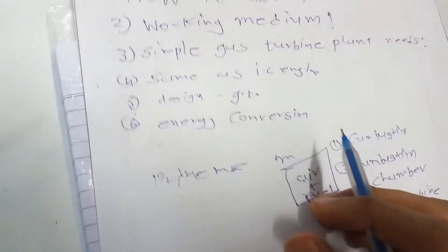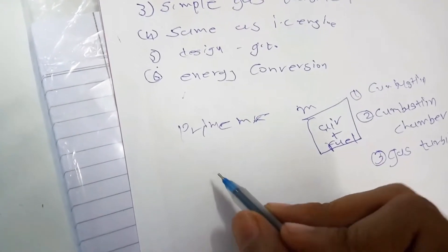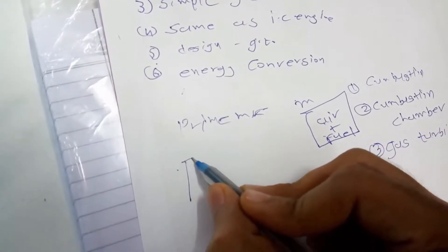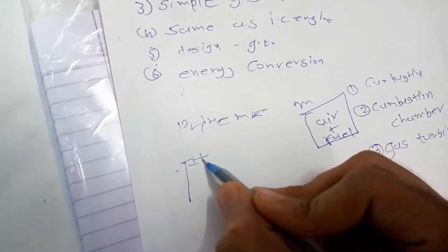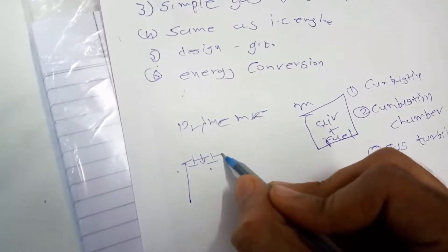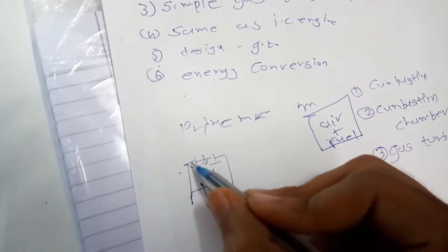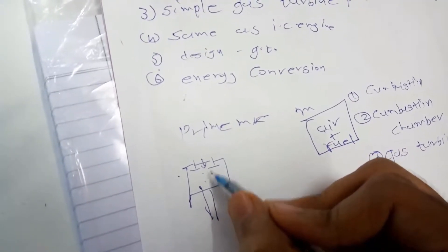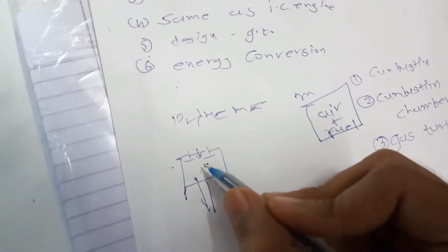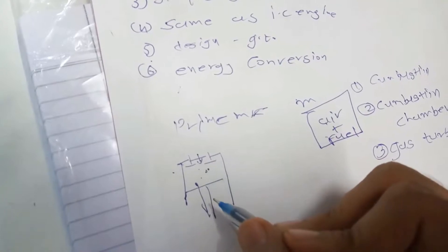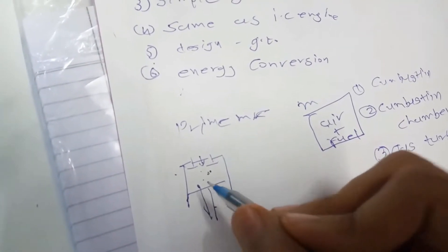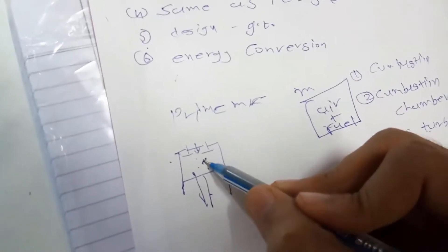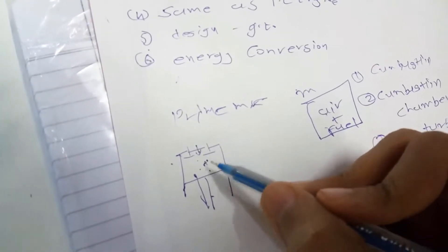The working principle of a gas turbine is the same as an IC engine. In an IC engine, there is a spark plug, an outlet valve, a piston, and an inlet valve. First fuel comes in, then the spark plug ignites the fuel. When it gets burned and expanded, we get mechanical energy, and after that the exhaust fuel gets discharged from here.